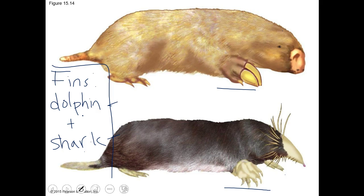There's also a mole cricket that has super short arms because it digs through the ground. If digging is your thing, it helps to have big, wide, short appendages close to the body - which is why you see that same body plan converge in very different organisms.